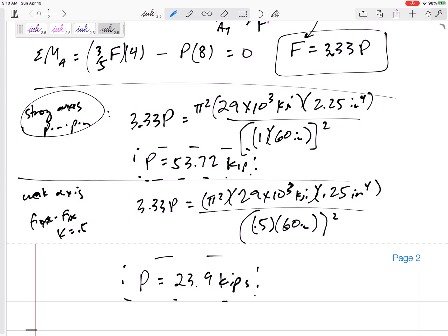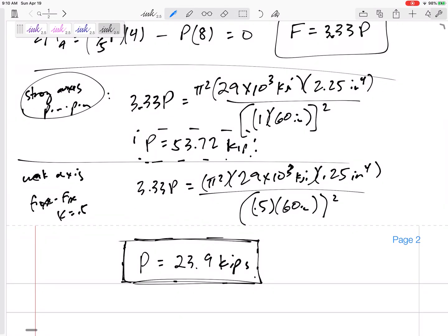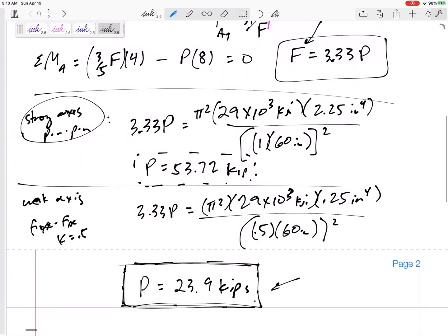Which way does it buckle first? It buckles at a force P of 23.9 kips. But I still needed to show all my work and test the stronger axis because it's not the same. If the strong axis is different than the weak axis, test out both of them. The column will buckle at 23.9 kips about the weak axis. Even though it's supported better against the weak axis, it's still going to buckle against the weak axis.